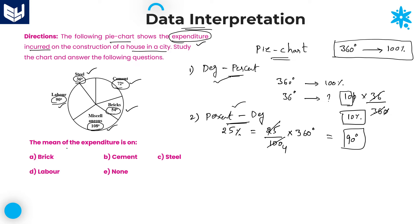The first question: find the mean of the expenditure. Mean is nothing but average. Average equals sum of observations divided by number of observations. If you add all the values in this pie chart, you will always get 360 degrees, because the entire pie chart is always 360 degrees.